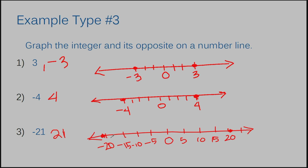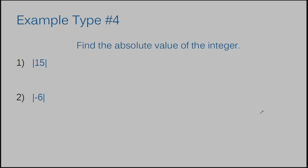Now let's move on to absolute value. The first example says find the absolute value of the integer. Absolute value literally just means the distance away from zero. So if I think of a number line, I'd have zero here and 15 somewhere down the line — literally 15 notches, each notch counting as one integer space in between. So the absolute value of 15 would be 15, because it's literally 15 spaces away.